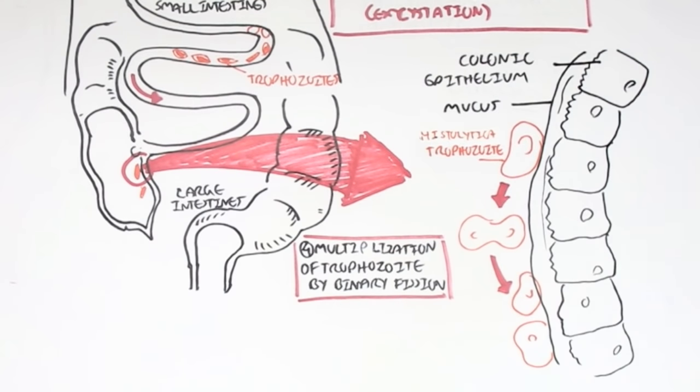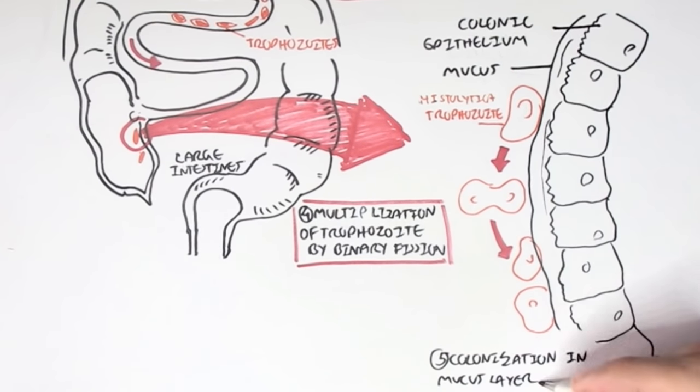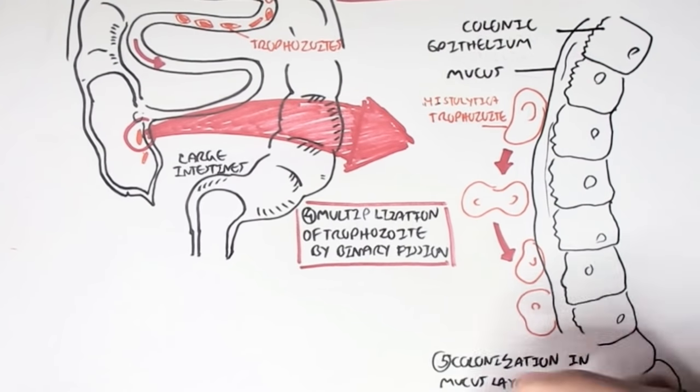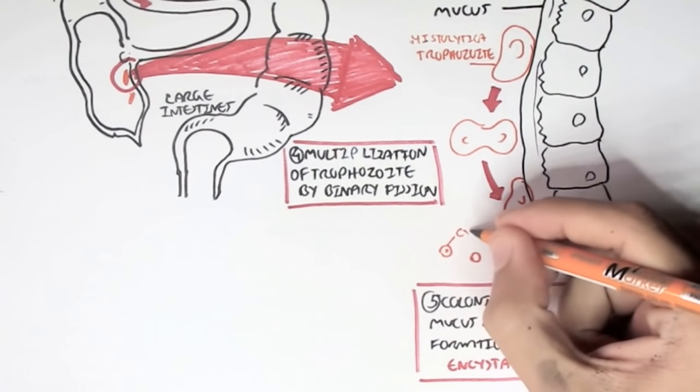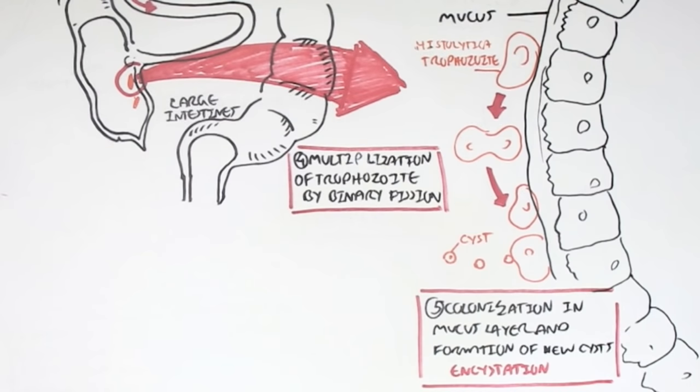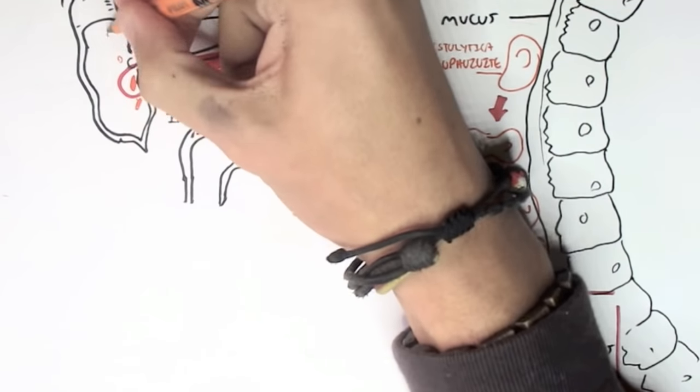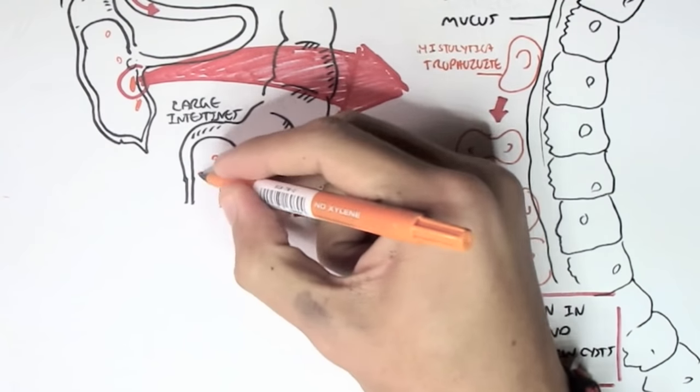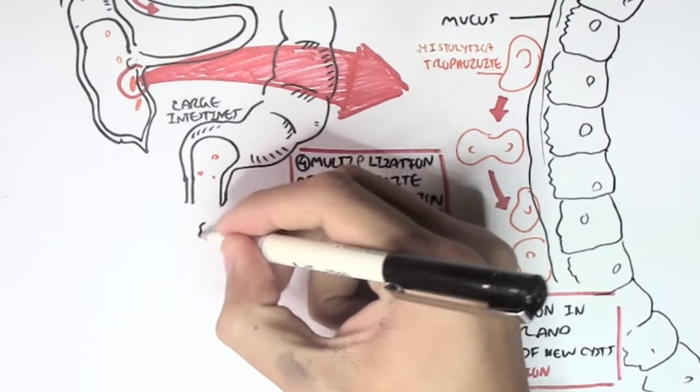The trophozoites will colonize in the mucus layer and form new cysts. This process is called encystation, where it makes new cysts. Here we have the trophozoites, which will just colonize the colon of the large intestines and just produce a lot of cysts. And this is the non-invasive infection.